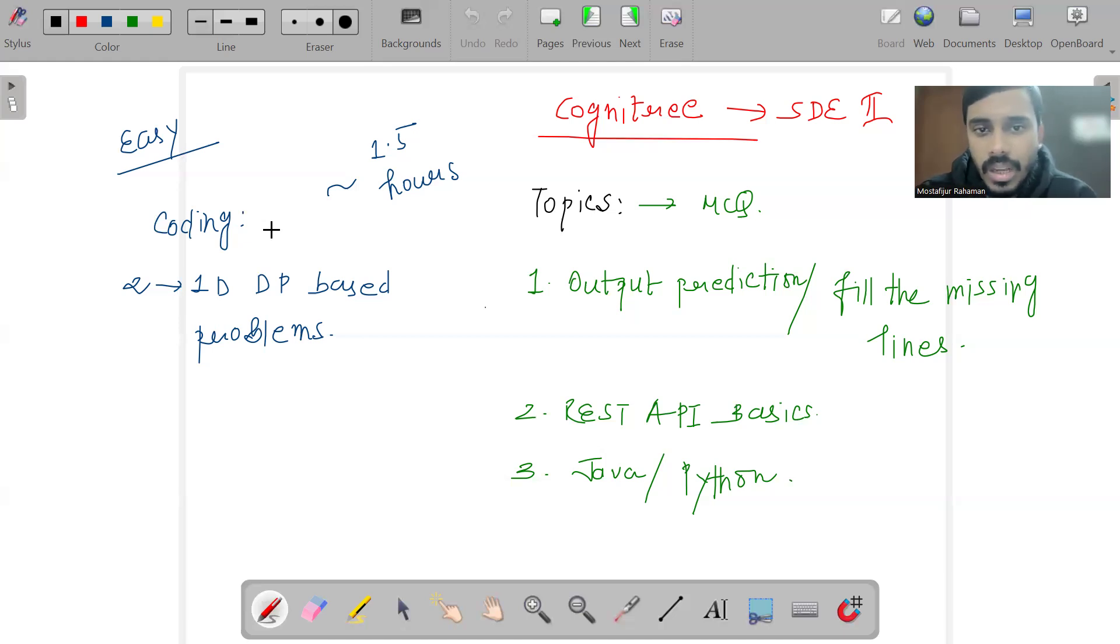Nothing was that hard - if anyone has done 1D DP problems they'd be able to attempt them. The overall time was 1.5 hours. I was able to finish the entire exam in no less than 40 minutes. The exam rating would be in the easier section.